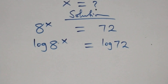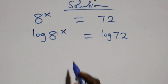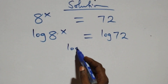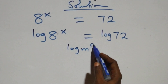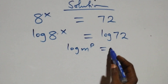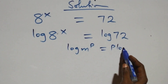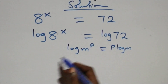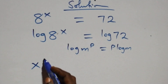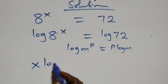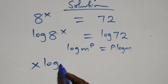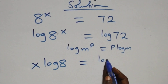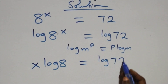The next step is we apply the power rule of logarithms. When we have log m raised to the power p, this is the same thing as p log m. So what we have becomes x log 8 equals to log seventy-two.